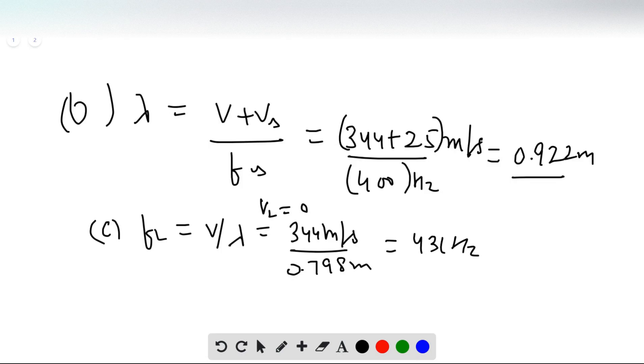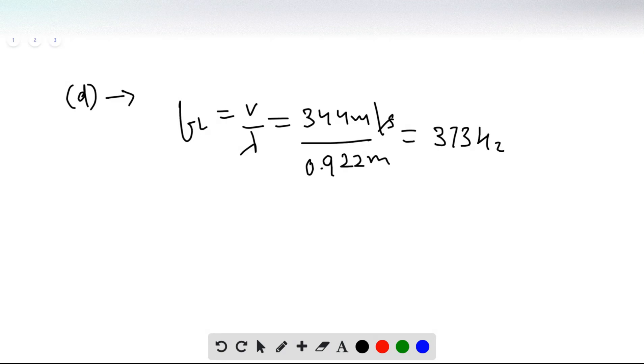For part D, FL equals V over lambda again, which is 344 meters per second over 0.922 meters, equals 373 Hertz. That's your answer for part D.